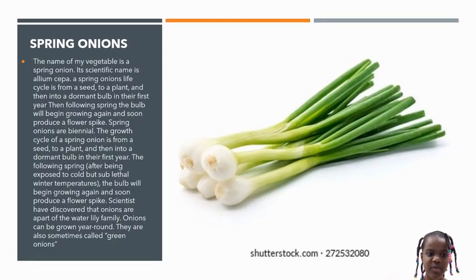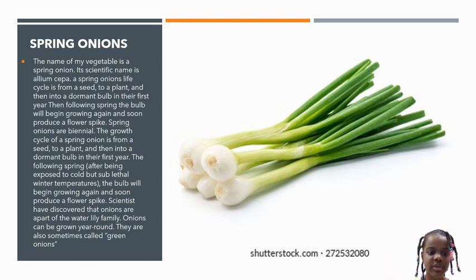Spring Onions: The name of my vegetable is a spring onion. Its scientific name is Allium cepa. Spring onion's life cycle goes from a seed to a plant and then a dormant bulb in their first year. The following spring, after being exposed to cold but sublittle winter temperatures, the bulb will begin growing again and soon produce a flower spike.